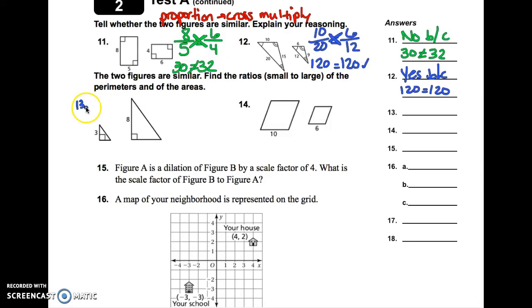All right, this problem right here should be number 13. It got cut off for some reason. So, on 13 and 14, it tells you the two figures are similar. Find the ratios, small to large, of the perimeters and of the areas. So, I'm going to put P for perimeter, and A for area. Now, perimeter is very simple. All it is is just the ratio of the two lengths of the sides. That's it. Now, since it says do small to large, you have to do the smaller one first. So, for perimeter, your ratio will just simply be 3 eighths, and we're done.